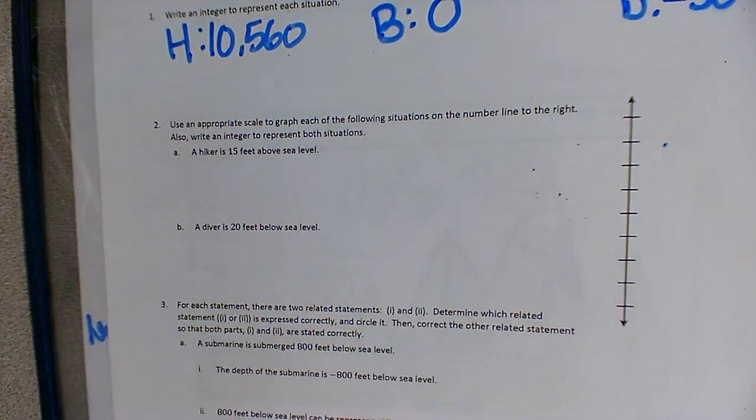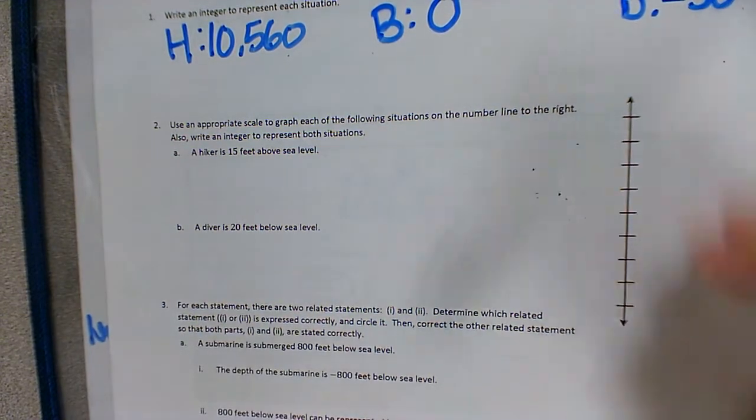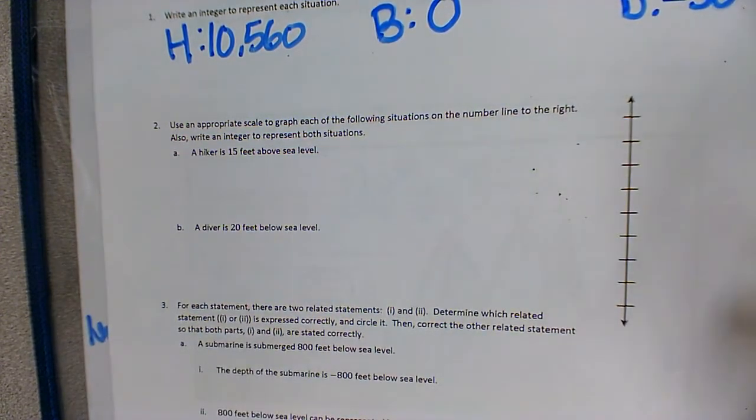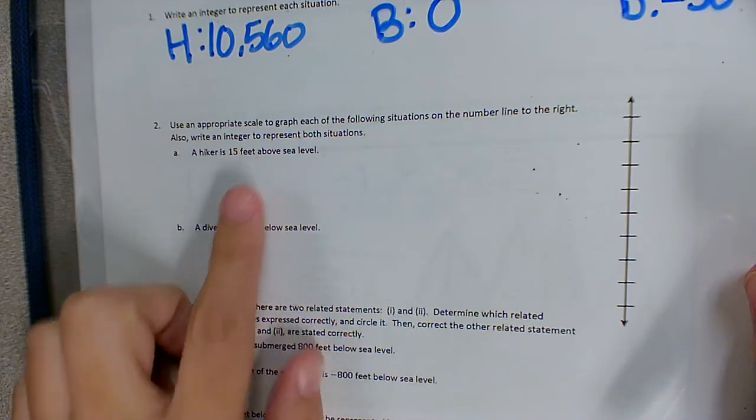Number two says use an appropriate scale to graph each of the following situations on the number line to the right. Also write an integer to represent each situation. So we have our number line here, and we need to scale it. So that means that we need to label it. So if we look at the points that we need to label, we have 15 feet above sea level and 20 feet below sea level. We don't have enough lines to go by ones.